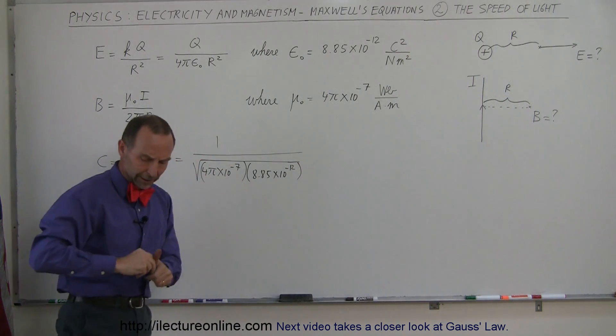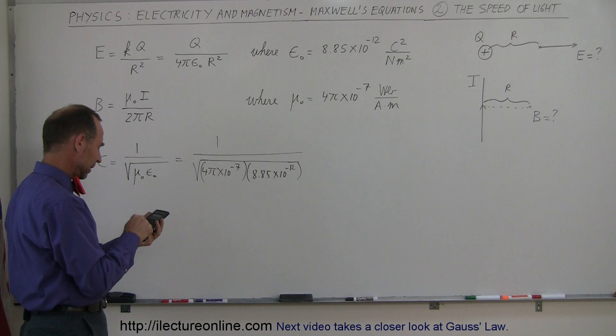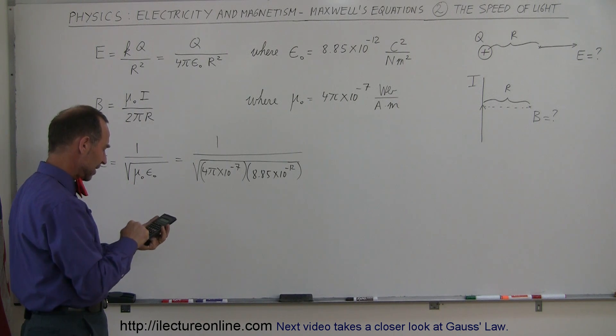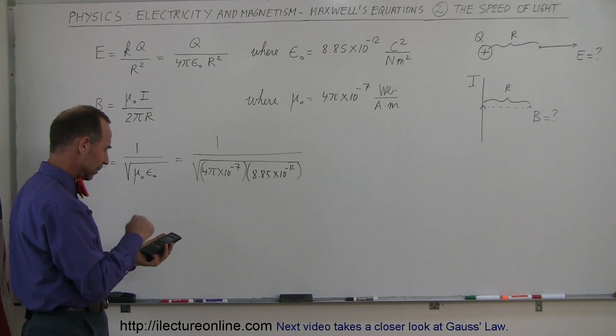And we then grab a calculator and we actually work that out. Amazingly enough, so we take, let's see here, we take π times 4 e to the 7 minus times 8.85 e to the 12 minus, and we then take the square root of that, and we take the inverse of that, 1 over that.